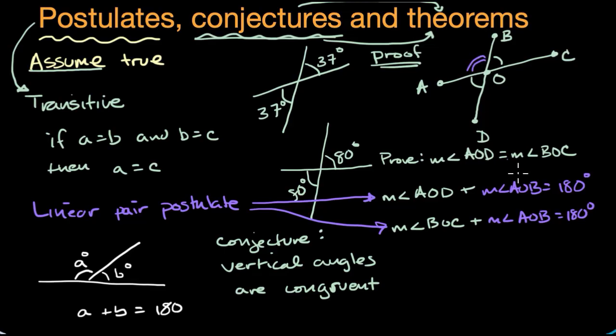So this is interesting here. What we could do is we could subtract the measure of angle AOB from both sides. So from that first one, we would get the measure of angle AOD is equal to 180 minus the measure of angle AOB. And we could take the second statement right over here, and we could say the measure of angle BOC is equal to 180 minus the measure of angle AOB.